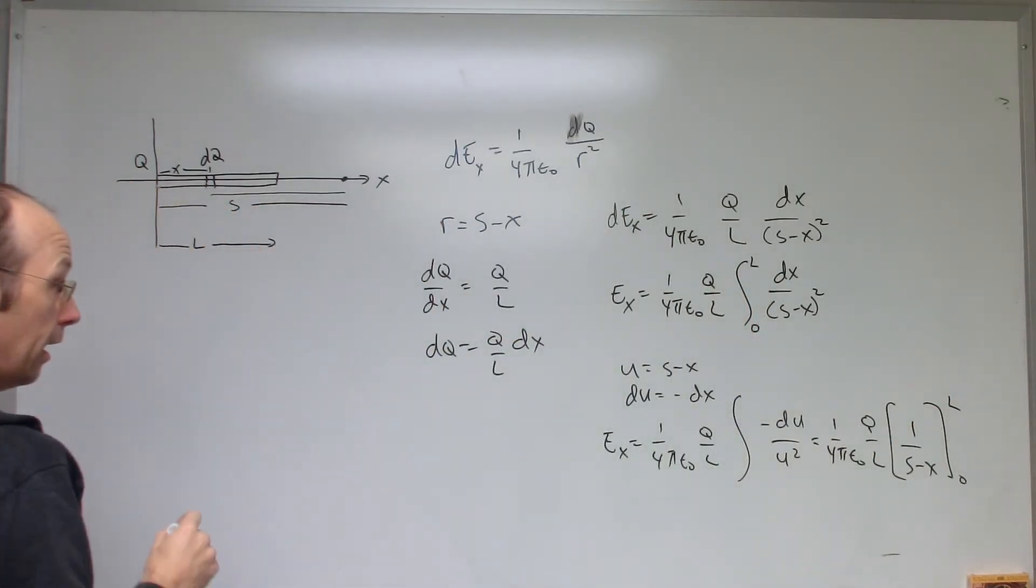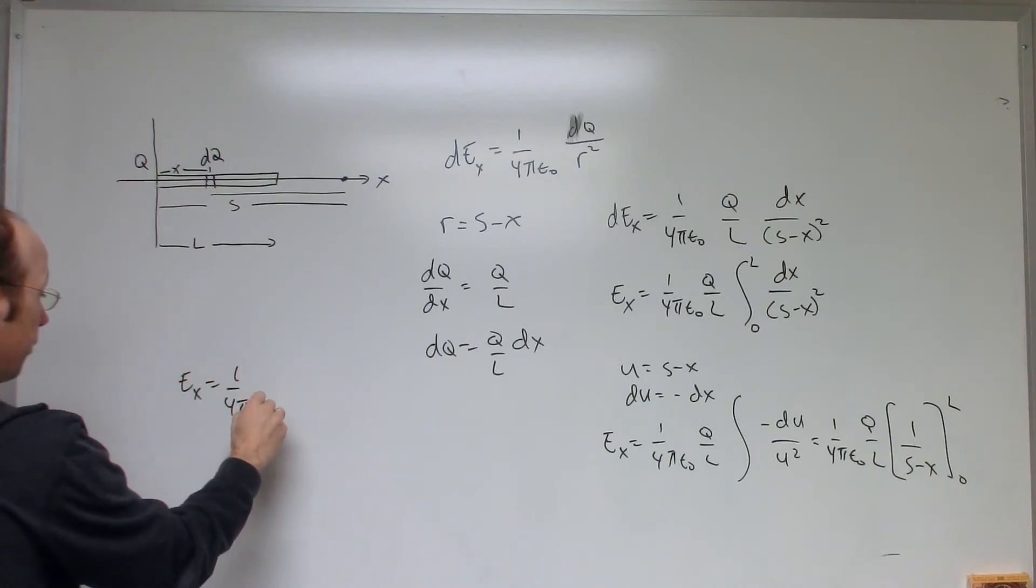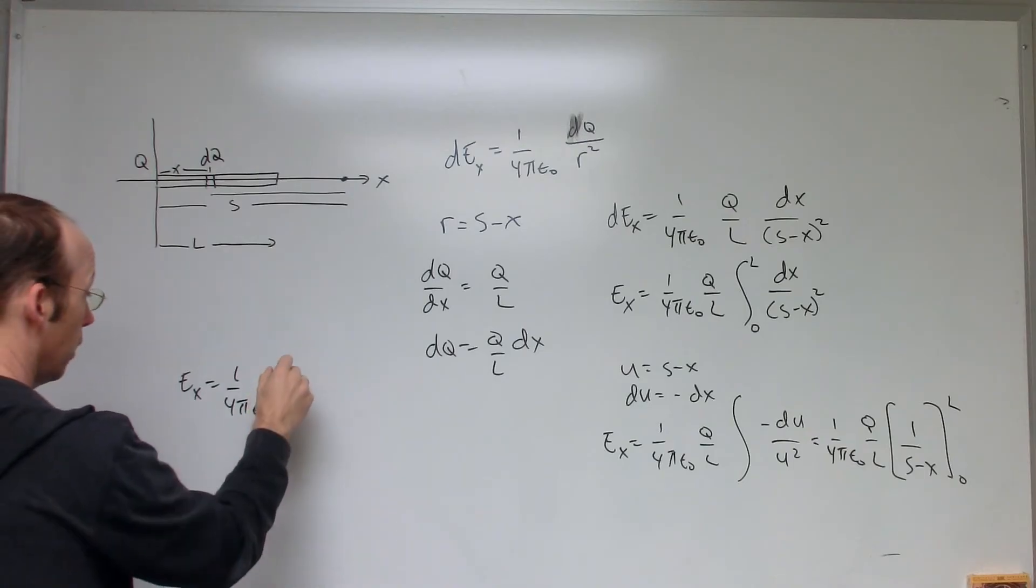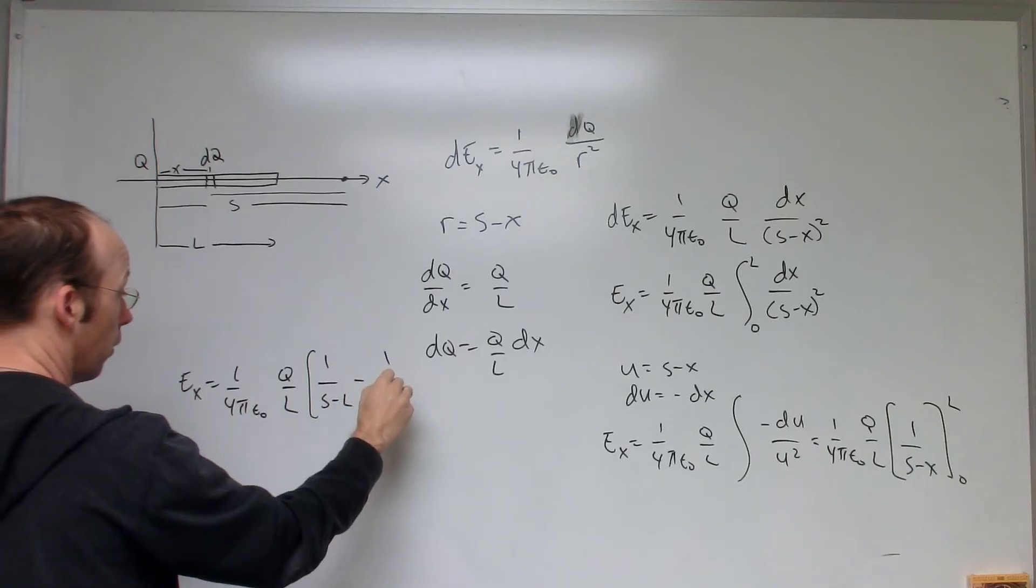Okay, so now if I do that, I get E_X, 1 over 4 pi epsilon naught, Q over L. And then I get this 1 over S minus L minus 1 over S.